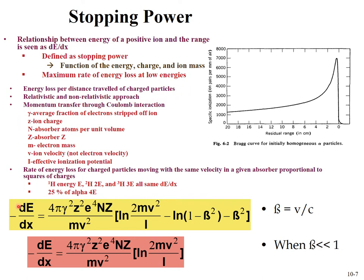The equations for energy loss as a function of distance include relativistic and non-relativistic forms. The terms include the average fraction of electrons stripped from an ion, the charge of the ion, the absorber atoms per unit volume, the Z of the absorber (higher Z means more electrons), the electron mass, the ion velocity, and the effective ionization potential. Different materials have different ionization potentials that influence stopping power.